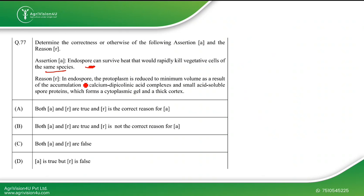The reason given is: in endospores, the protoplasm is reduced to minimum volume as a result of accumulation of calcium dipicolinic acid complexes and small acid-soluble spore proteins, which form a cytoplasmic gel and thick cortex.